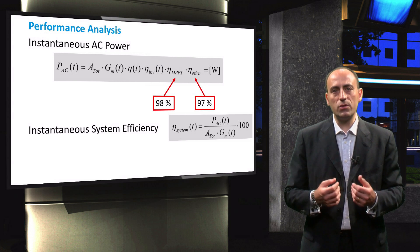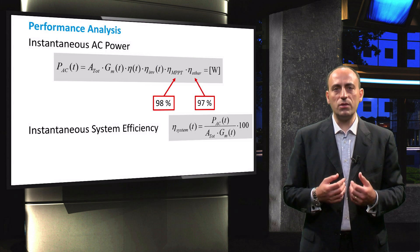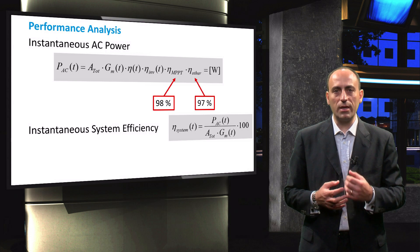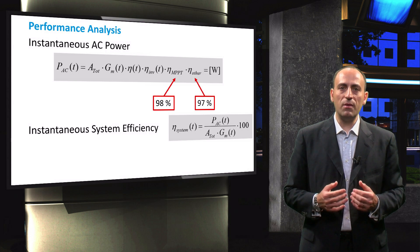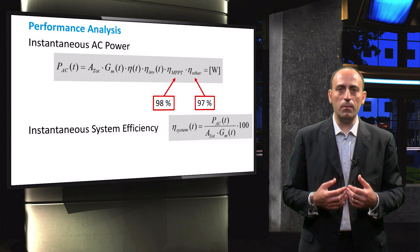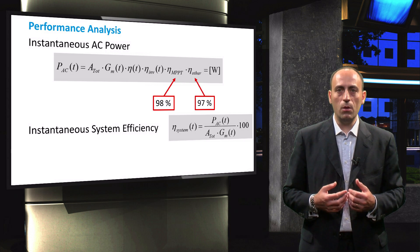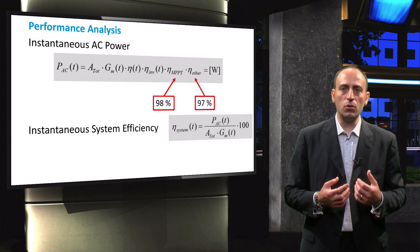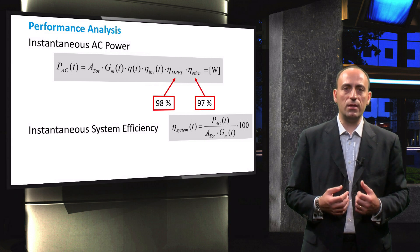Following the instantaneous AC power, the instantaneous system efficiency, eta system, can be calculated. The system efficiency is equal to the AC power output divided by the power incident on the modules, which is equal to the product of the total module area and incidence irradiance.